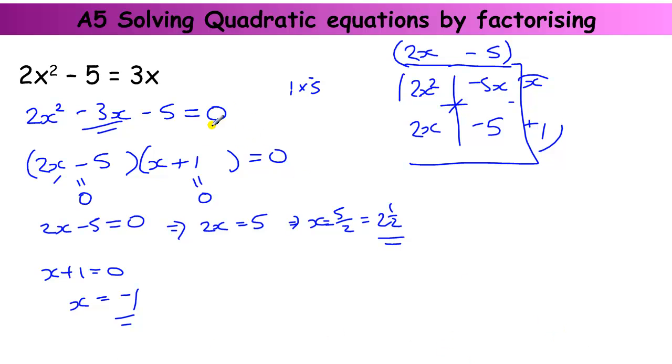So essentially, to solve this, you've got to make it equal to 0, factorize into brackets, then each bracket's got to be 0.